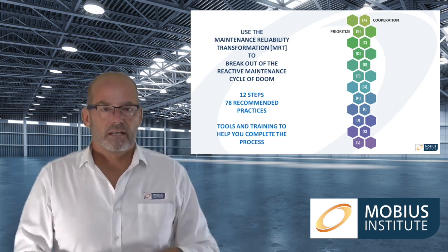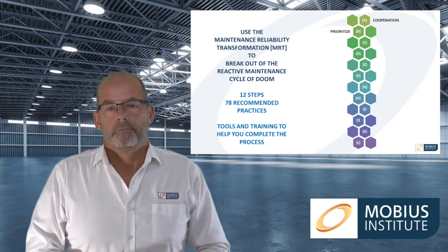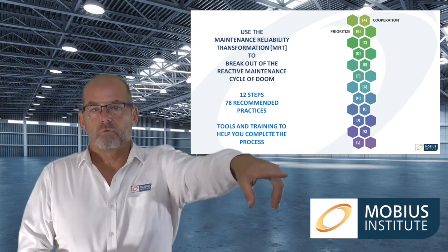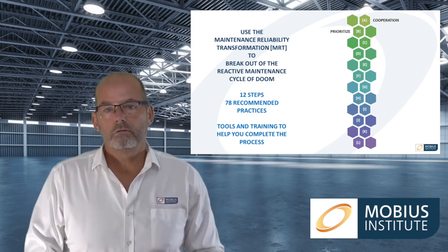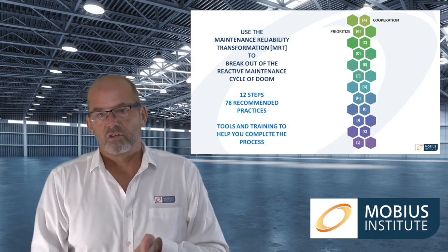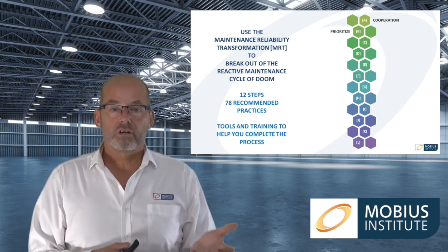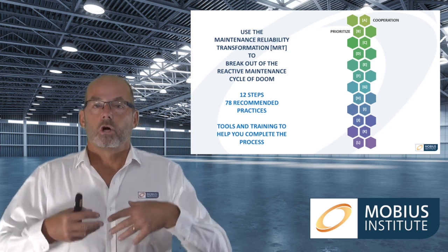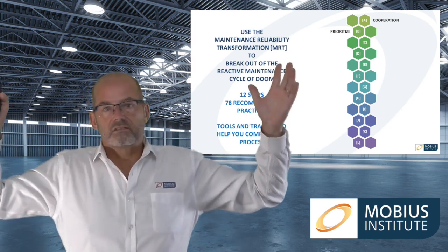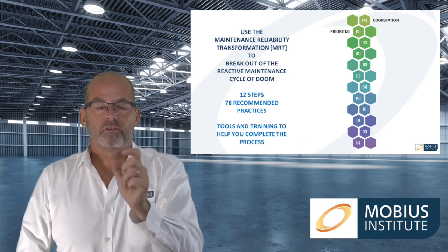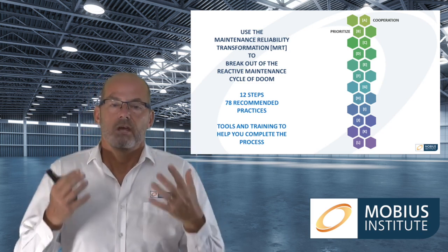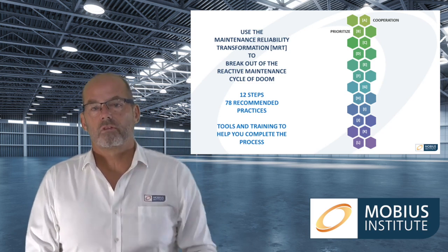We must prioritize what we are doing. You might have 1,000, 10,000, or 30,000 assets — if you try to improve reliability, where do you start? Not alphabetically. You need to focus on the assets that are failing the most, costing you the most, and causing the most downtime. We do that with criticality analysis and bad actor analysis. Instead of focusing on 10,000 assets, you're focusing on the 50 worst — the worst first, then the second worst, and so on — making huge progress.